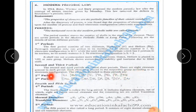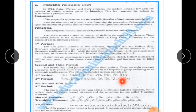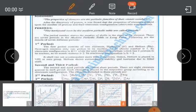The elements in the second period are: lithium, beryllium, boron, carbon, nitrogen, oxygen, fluorine, and neon. The elements in the third period are: sodium, magnesium, aluminium, silicon, phosphorus, sulfur, chlorine, and argon.